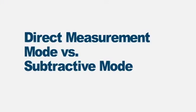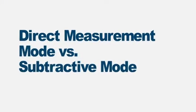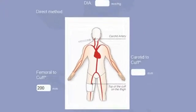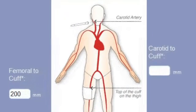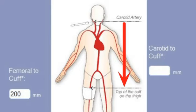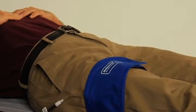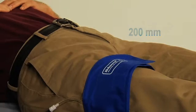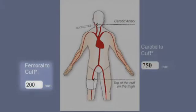Distances can be entered in one of two modes. Using the direct measurement mode, the distance is measured directly from the point of the strongest carotid pulse to the top of the femoral cuff. This value is entered in the box marked Carotid to Cuff. The system default distance from the femoral artery to the edge of the cuff is 200 millimeters; the actual distance should be measured for each patient and entered into the system.